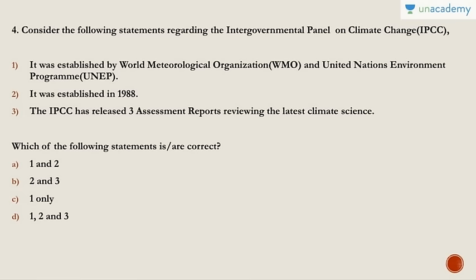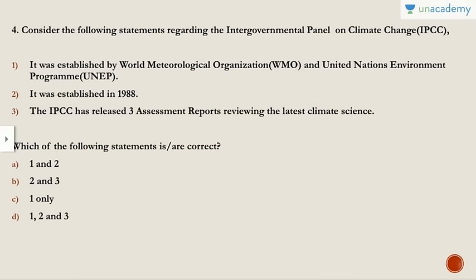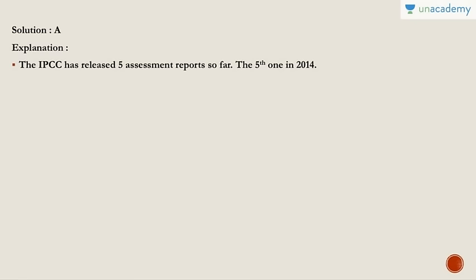Question four: Consider the following statements regarding the IPCC. It was established by the WMO and UNEP; it was established in 1988; and the IPCC has released three assessment reports reviewing the latest climate science. The answer is A because the fifth report was released in 2014. It is very important in environment and ecology to know what IPCC is. WMO plus UNEP established the Intergovernmental Panel on Climate Change — note the 'I' stands for intergovernmental, not international. The IPCC has released five assessment reports so far, with the fifth one in 2014.